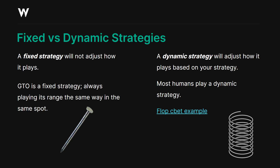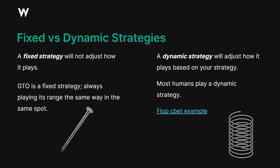I want to talk about fixed versus dynamic strategies. A fixed strategy simply means your opponent will not adjust how they play — or you will not adjust. GTO is by definition a fixed strategy; it's always going to play its range the same way in the same spot. Sure, it'll adjust on different textures and against different bet sizes, but it's not going to adjust to its opponent. A dynamic strategy is one that adjusts based on the opposition. Most humans play a dynamic strategy or somewhere in between. People tend to play closer to a fixed strategy when playing fast-fold zoom games or multi-tabling, and more dynamic when they can zone in on opponents in non-anonymous or heads-up games.